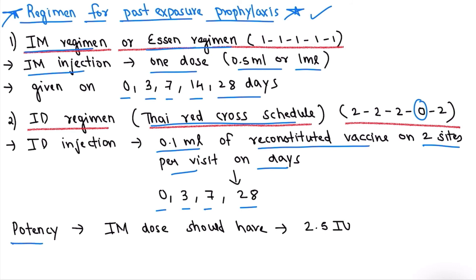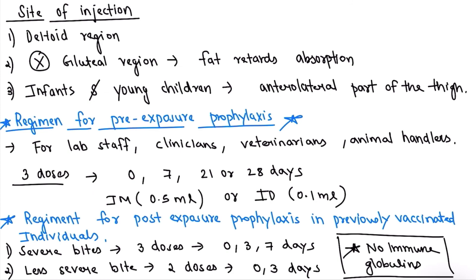Regarding potency: the intramuscular injection should have a minimum potency of 2.5 IU. For the site of injection in post-exposure prophylaxis, the best site is the deltoid region. The gluteal region is contraindicated because fat retards absorption of the vaccine.